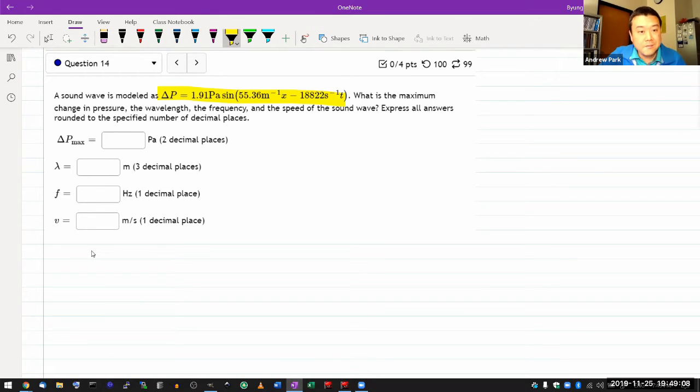So this is once again testing you on whether you remember the standard representation of a traveling periodic wave. What that looks like is a function of position and time that looks like the amplitude, or what's sometimes called maximum displacement, times a sinusoidal function where the argument is given in the form of kx minus omega t.